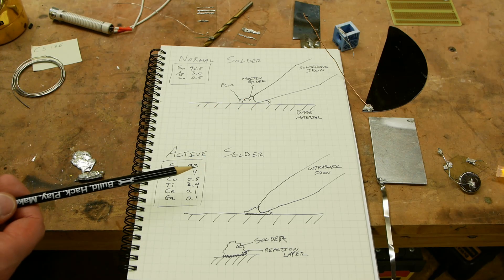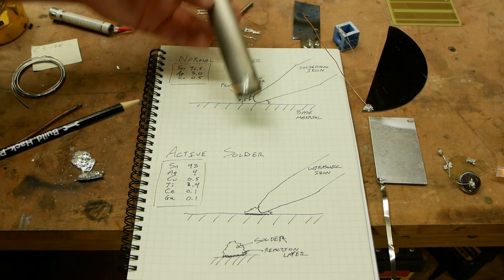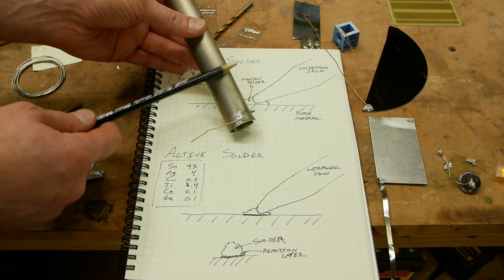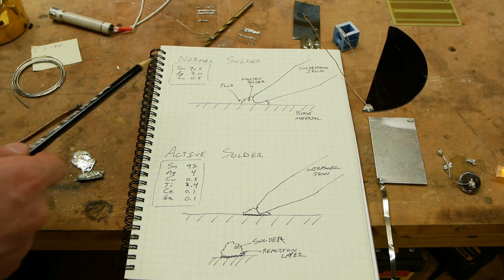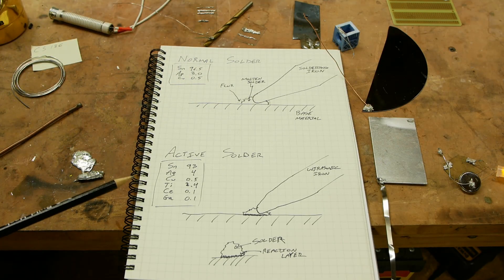Like let's say titanium for example. Titanium is notoriously difficult to bond because it's so incredibly active. Then what do we do? Then we go to this active soldering technique.